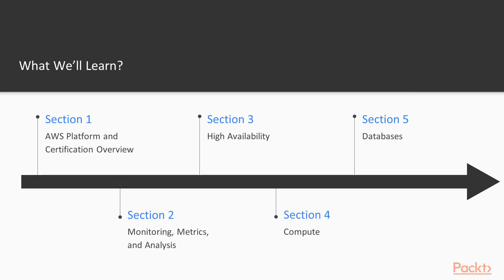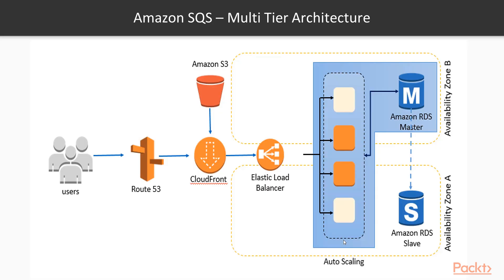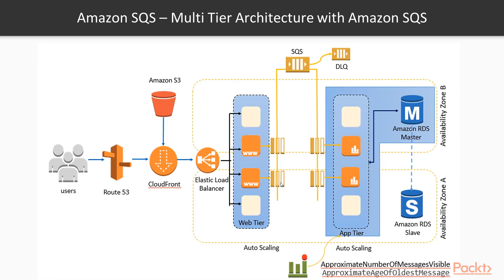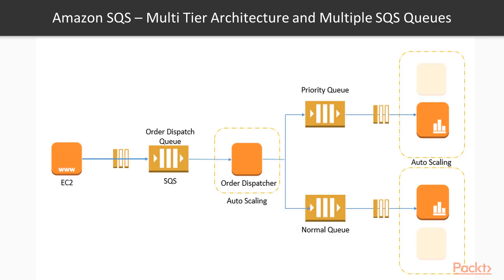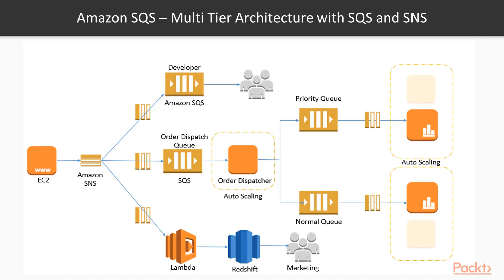Section three covers high availability, which focuses on how to design cloud solutions that are highly available, incorporating components of scalability, elasticity and fault tolerance to ensure maximum availability and minimum downtimes.